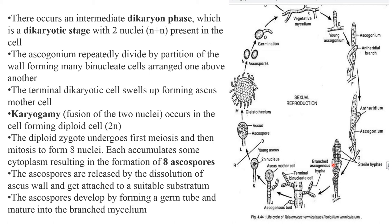The ascogonium repeatedly divides by partitioning of the wall, forming many binucleated cells arranged one above the other. The terminal dicaryotic cell swells up, forming an ascus mother cell. Karyogamy, that is fusion of two nuclei, occurs in the cell forming a diploid cell.